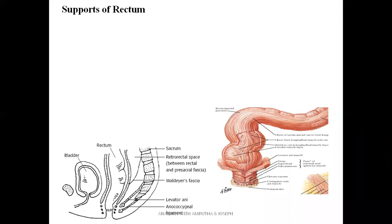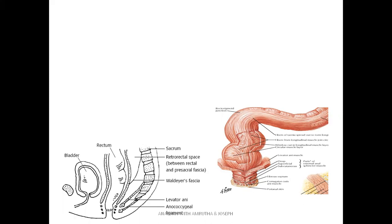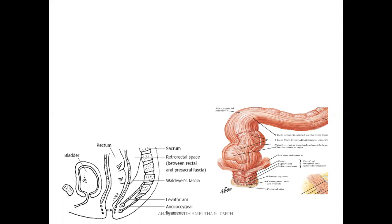Now let us see the support of the rectum. The rectum is almost straight but has curvatures as we have seen. There is a chance that because of the position of the rectum and increased abdominal pressure, problems can arise. Increased abdominal pressure can be due to many things — it can happen normally in pregnancy in females where the uterus is expanding, causing increased abdominal pressure, or due to other reasons like a chronic cough leading to increased abdominal pressure.